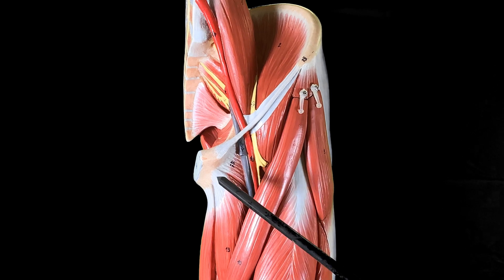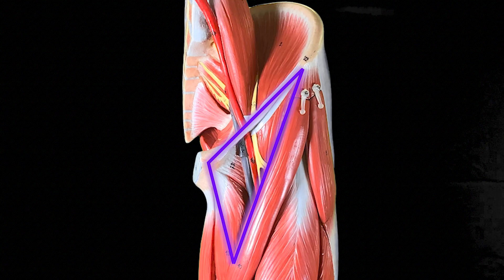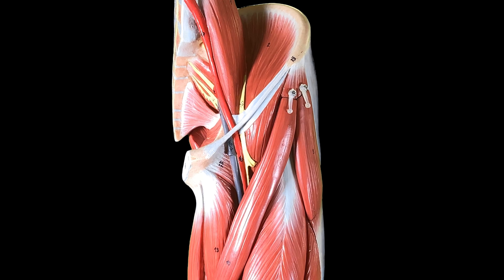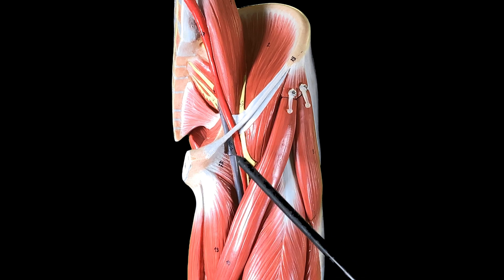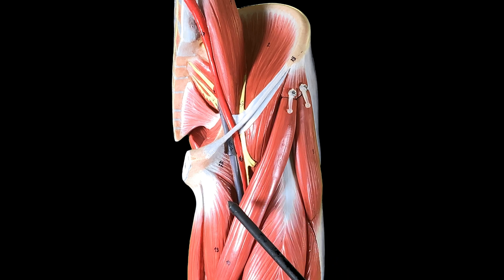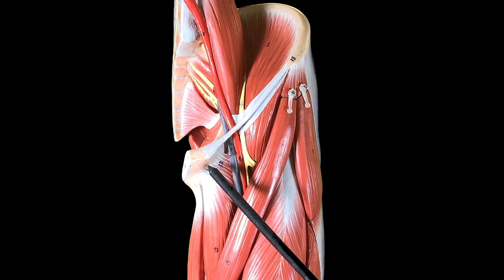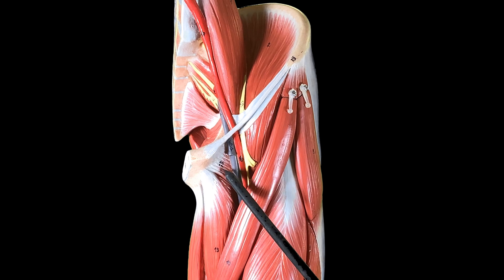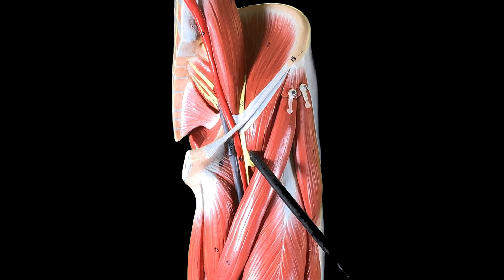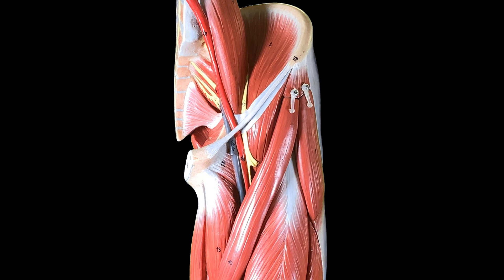Now we will look at the structures that make the floor of the femoral triangle. The structures contributing to the floor, from medial to lateral, are the pectineus muscle and the iliopsoas tendon.